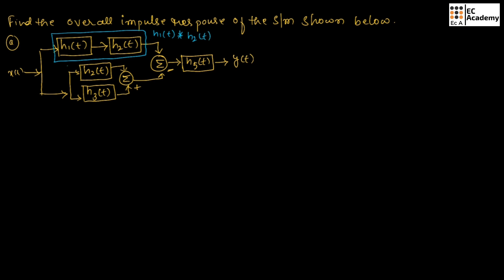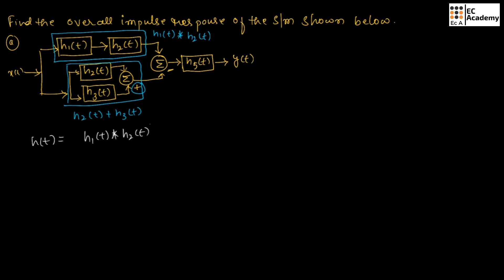Now, these two impulse responses are in parallel with a plus sign, so we can write the impulse response as H2 of t plus H3 of t. Now, these two impulse responses are in parallel form with a negative sign. So, we can write the impulse response for the system as H of t is equal to H1 of t convoluted with H2 of t, minus H2 of t plus H3 of t.